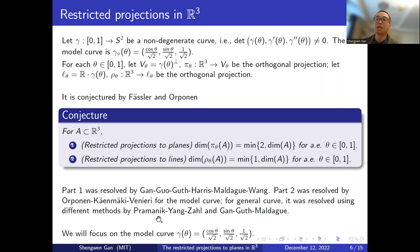For general curves, it was resolved using different methods by two groups of people. In the paper of Malabika Pramanik, Kongo Yang, and Josh Zahl, they used incidence estimates for circles to prove the second conjecture. In the paper by myself with Larry Guth and Dominic Maldague, we used a similar method as in the six-people paper. In this talk, I will focus on the model curve and show some key ideas in the proof of the first part, the restricted projections to planes.